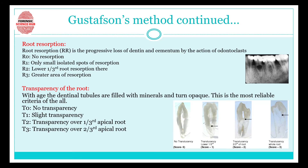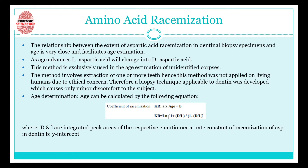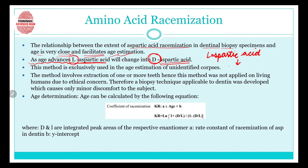The amino acid racemization method is based on the relationship between the extent of aspartic acid racemization in dentinal biopsy specimens and age. As we grow older, L-aspartic acid — an amino acid — starts to convert into D-aspartic acid, a process called racemization. Among age-related chemical changes in proteins, such as oxidation, isomerization, and racemization, the conversion of L-form to D-form is particularly significant.